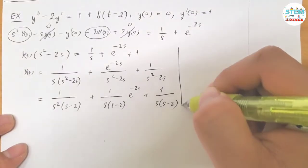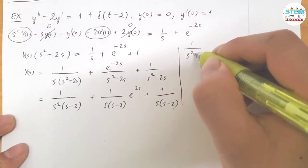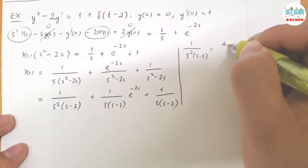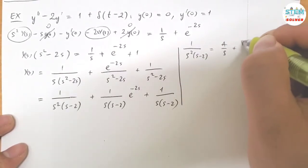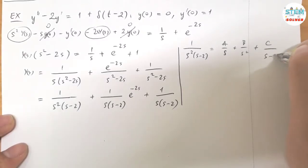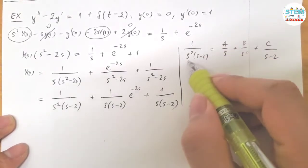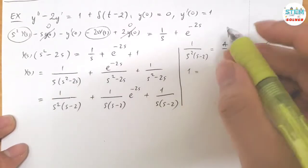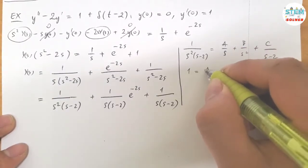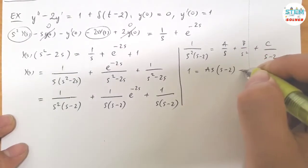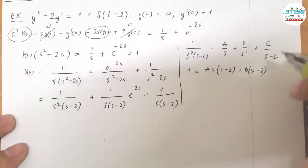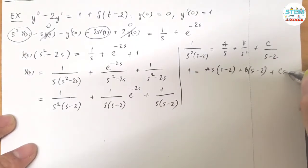So 1 over S squared S minus 2 equals A over S plus B over S squared plus C over S minus 2. And then the LCD is this, so multiply both sides by that LCD gives me 1 equals A S S minus 2 plus B S minus 2 plus C S squared.